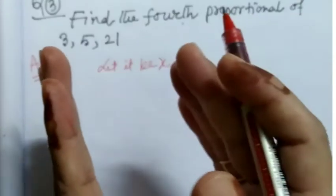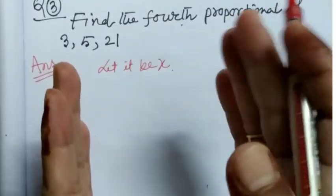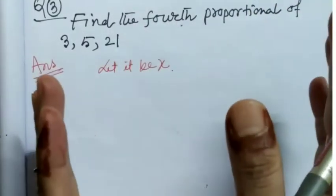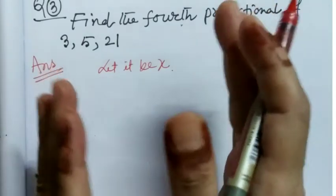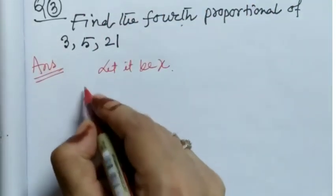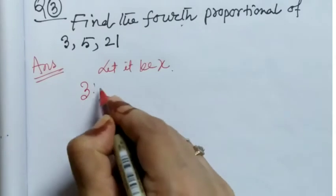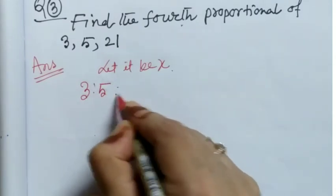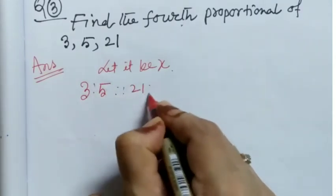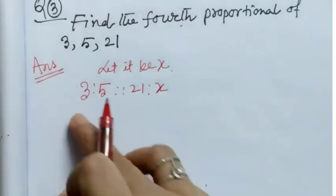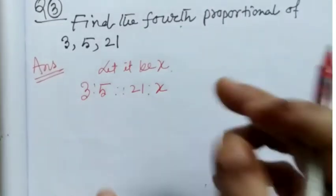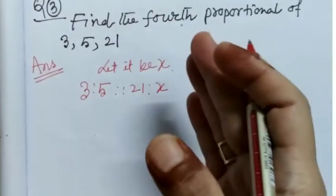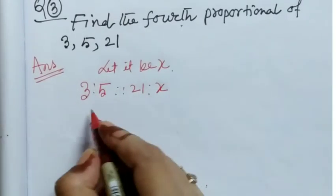But how can we say they are in proportion? How can we say that these terms are in proportion? Right. If they are in proportion, we know, then 3 is to 5 as 21 is to x. So they are in proportion.